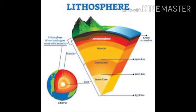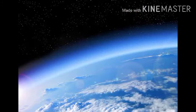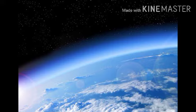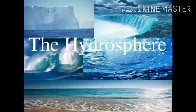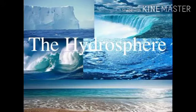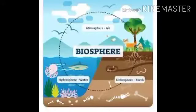The surface of the earth is a complex zone in which three different components meet. The solid portion of the earth is the lithosphere — basically 'lithos' means rocks. The gaseous layers that surround the earth form the atmosphere, which contains oxygen, nitrogen, carbon dioxide, and other gases. The large amount of water covering the earth's area is the hydrosphere. The biosphere is the narrow zone of the earth where these three components mix.